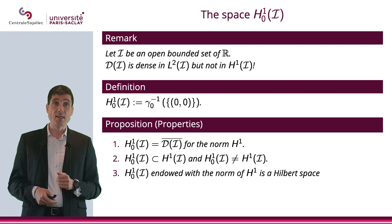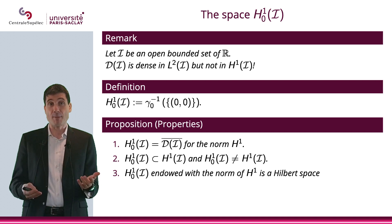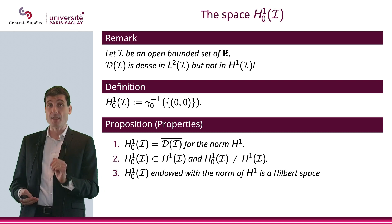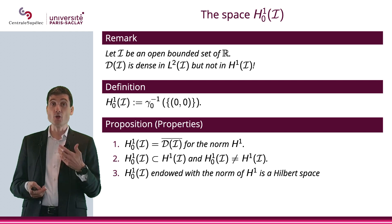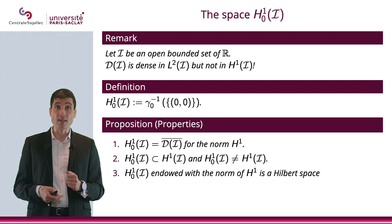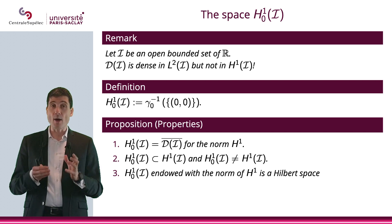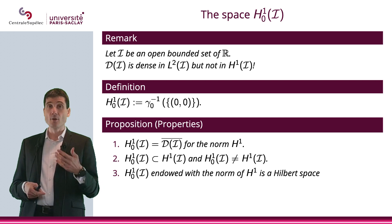Second property is that H^1_0 will be included in H^1 as expected, but it will not be H^1. In other words, you will have functions in H^1 that do not belong to H^1_0. And finally, if you endow H^1_0 with the norm of H^1, then it is a Hilbert space.